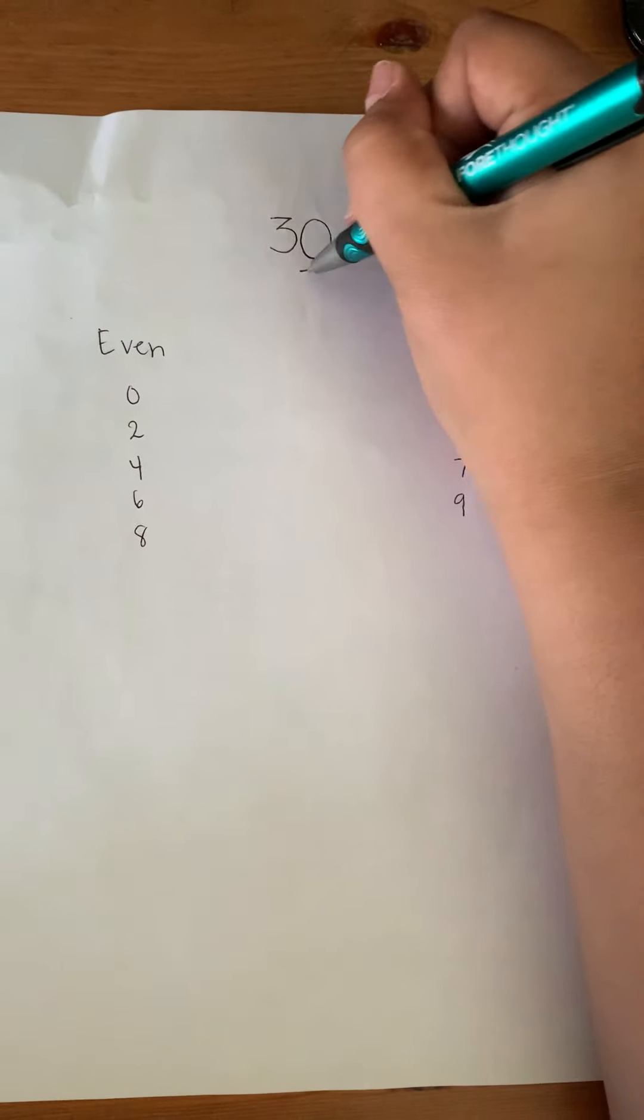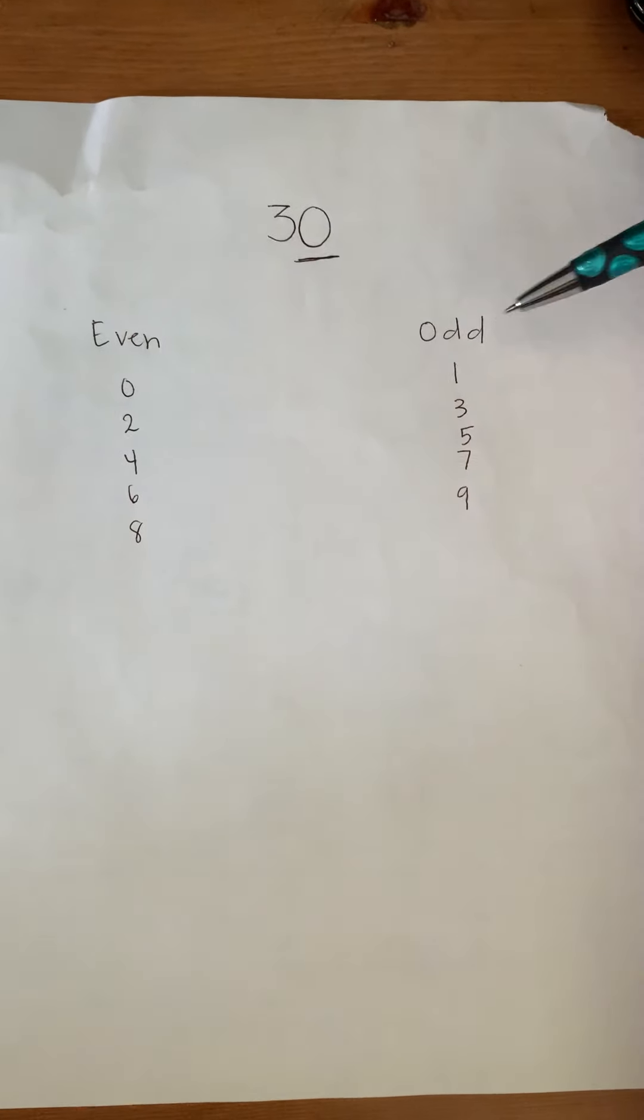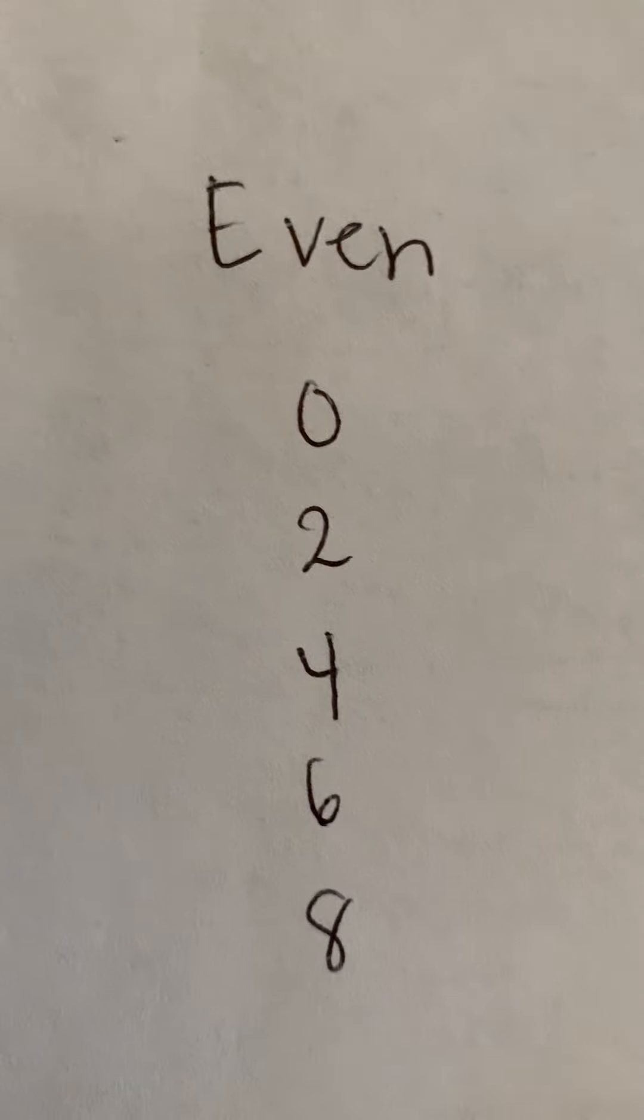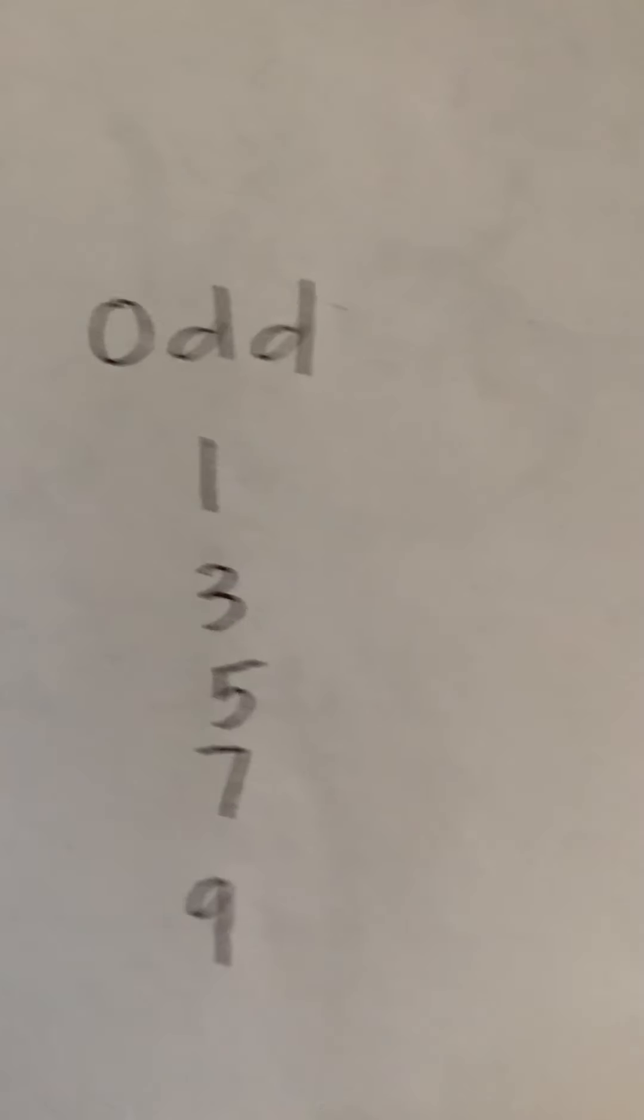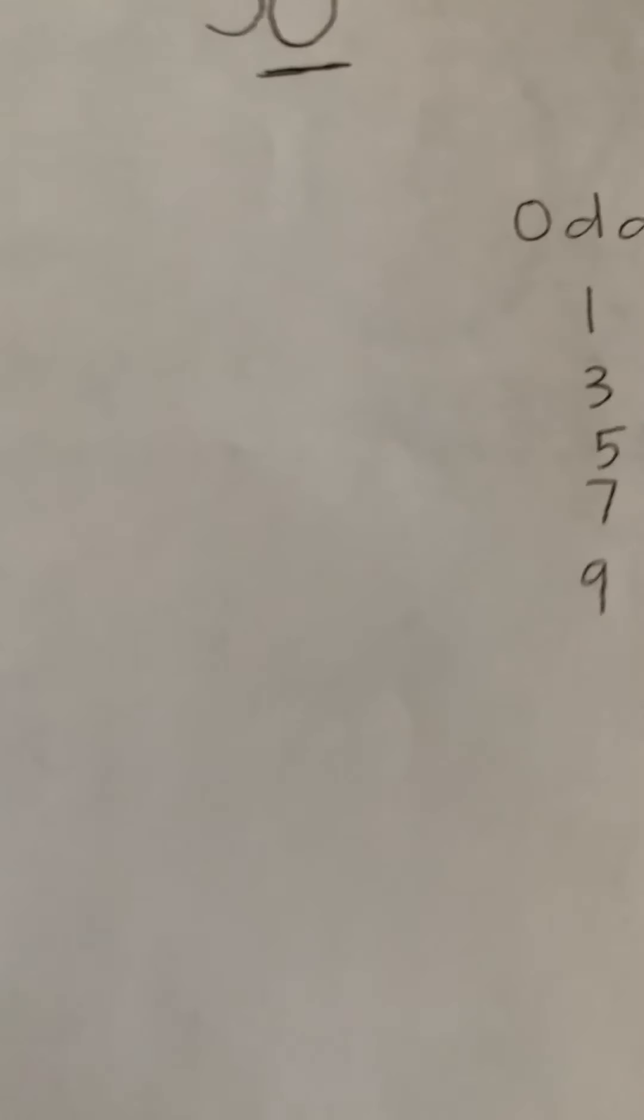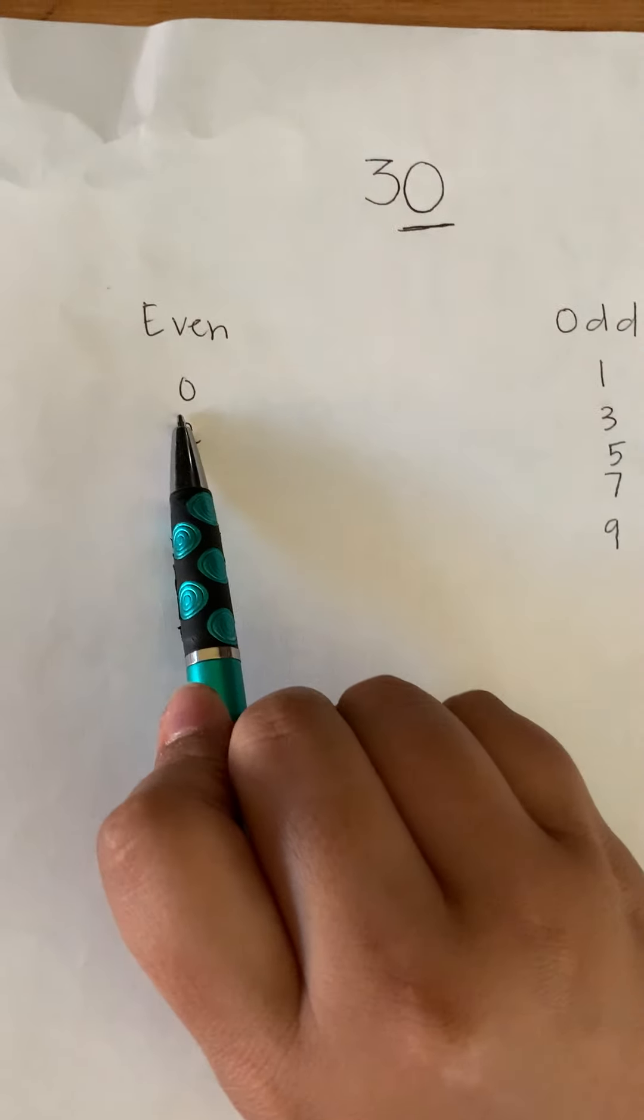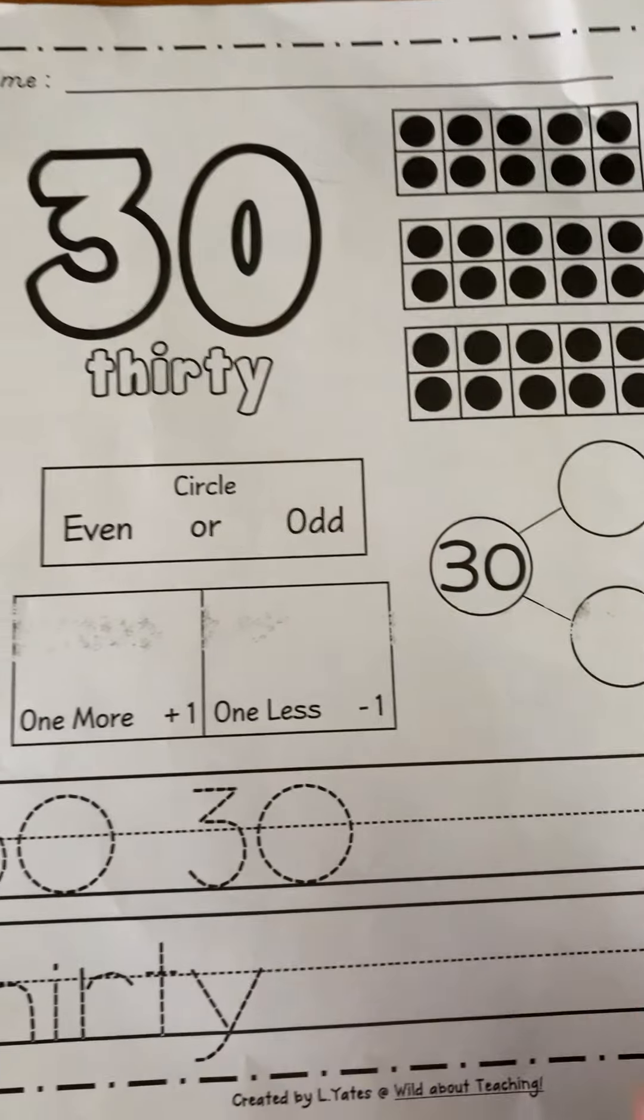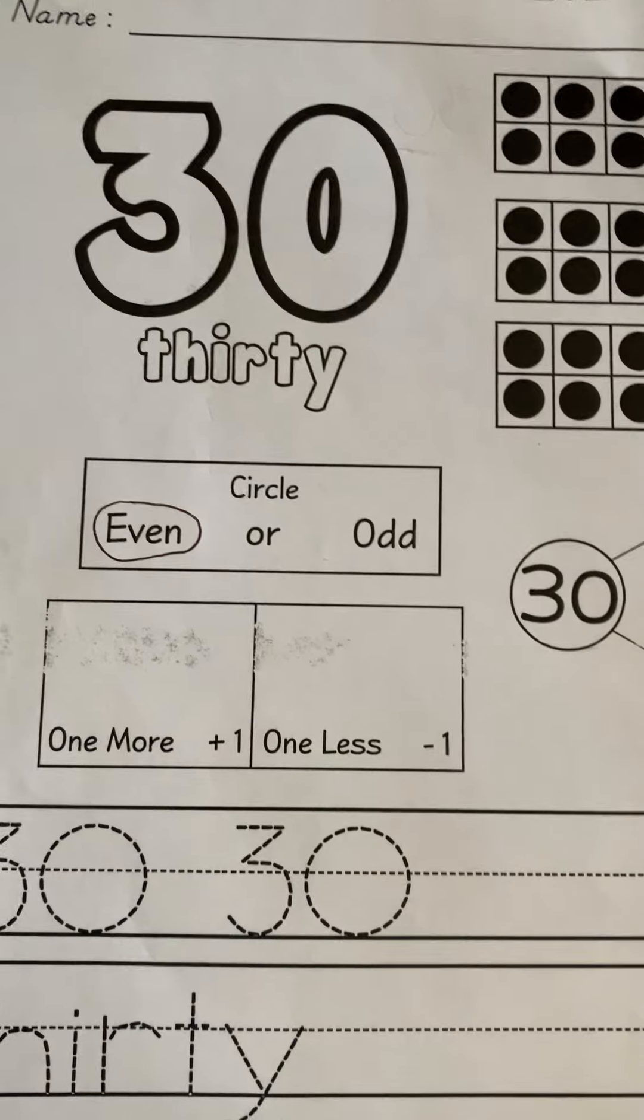So we're looking at our zero. Is zero even or is it odd? There's my zero. Is it even? You see a zero here. Or is it odd? Is there a zero in this group of numbers? If you said even, then good job. Because here's my zero right here. Zero falls under even. So I'm going to go back to the front of my worksheet and I'm going to circle even. So the number 30 is even.